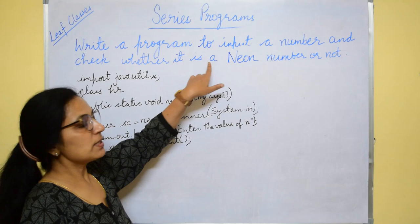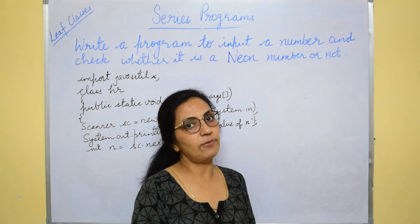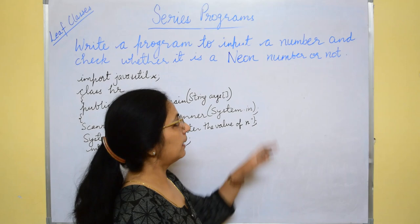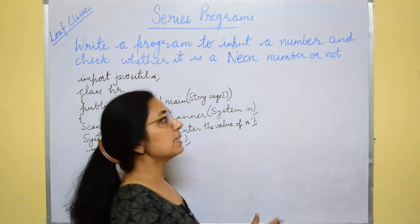The next question says to input a number and check whether it is a Neon number or not. Just now we did Neven number, now it is Neon number. Don't get confused, the definition will always be there in the question. Neon number is if the sum of the digits of the square of the number is equal to the number, then that number is known as Neon number.